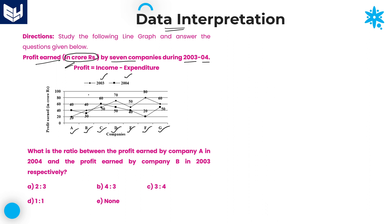Along with that, we have one more important formula: Profit = Income − Expenditure. If you subtract expenditure from income, you get profit. Here we have three variables — profit, income, and expenditure. If you know any two, you can easily calculate the third. In this line graph all profit values are provided, so if income is given you can find expenditure, and vice versa.